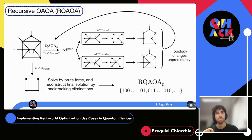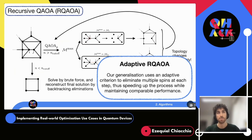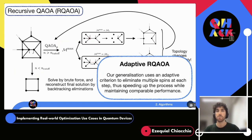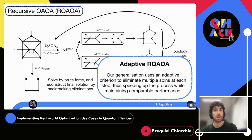We also devised a generalization called Adaptive RQAOA, which follows a statistical criterion to select multiple expectation values simultaneously, enabling multiple eliminations at once. This makes the whole process faster and performs comparably to eliminating one qubit at a time. This is very important when running on quantum hardware, where resources are expensive in terms of both money and time, and this generalization opened the door to performing many interesting experiments.